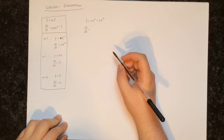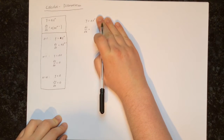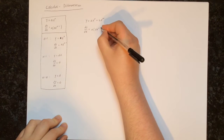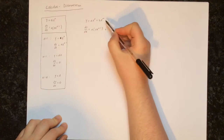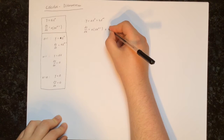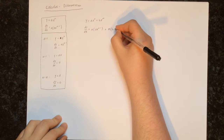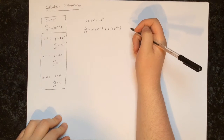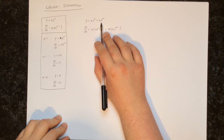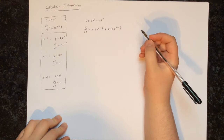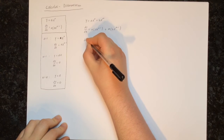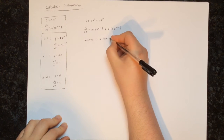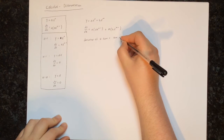The way we're going to find the derivative is we're going to take the derivative of each thing by itself. First we take the derivative of ax to the power of n — we multiply by the power and reduce the power by 1. Then we add the derivative of the second part: m times bx to the power of m minus 1, because we reduce the power by 1. This works for any number of terms. The derivative of a sum is equal to the sum of the derivatives.